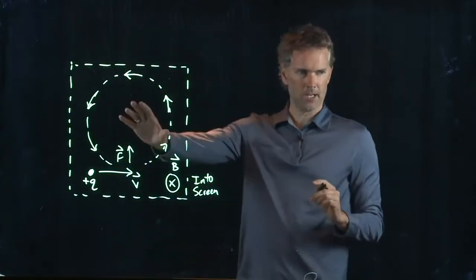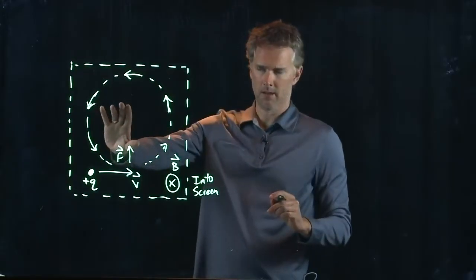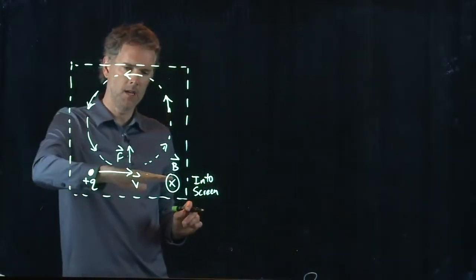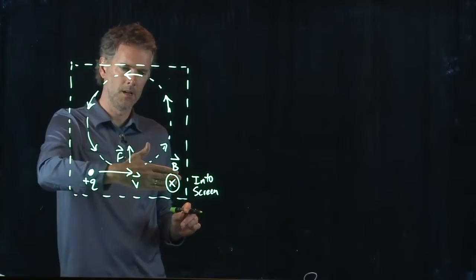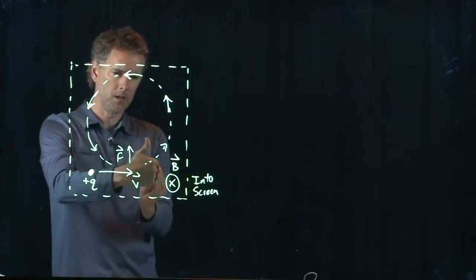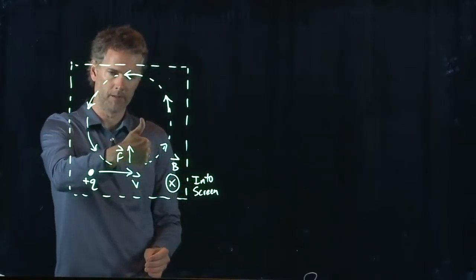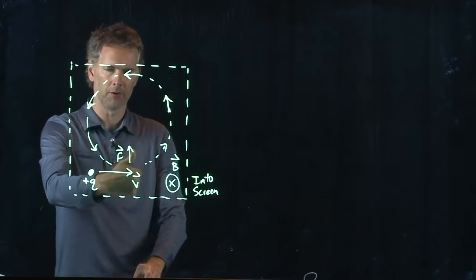Okay. Is that right? Did everybody see that? Okay. V is to the right. B is into the screen. Thumb is the direction of force. So, it's towards the center of the circle at this point.